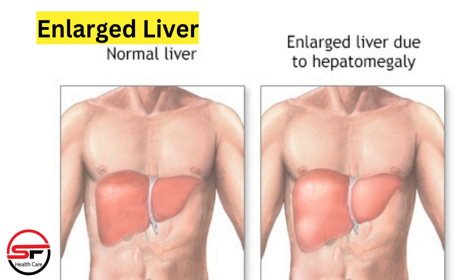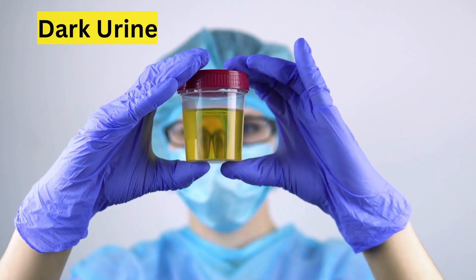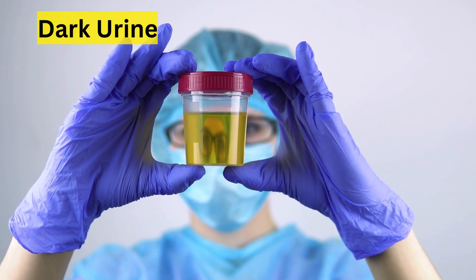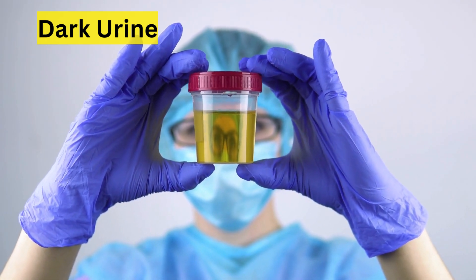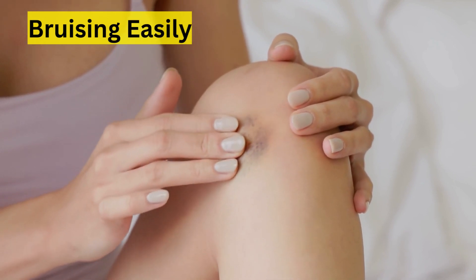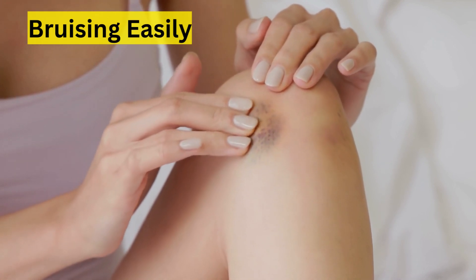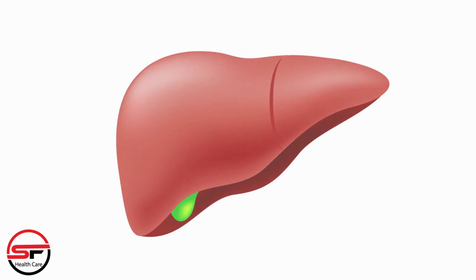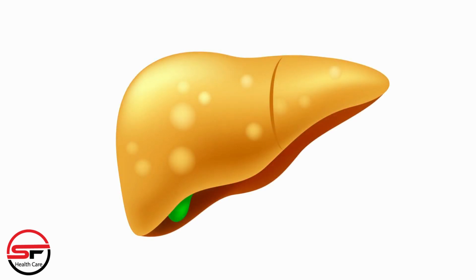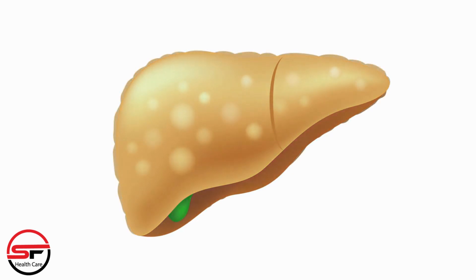Enlarged liver: in some cases, the liver might enlarge, leading to discomfort on the right side of the abdomen, where the liver is situated. Dark urine: dark urine can be a sign of liver problems, including fatty liver disease. The dark color indicates the presence of bilirubin, a substance processed by the liver. Bruising easily: liver dysfunction can affect blood clotting factors, leading to easy bruising and prolonged bleeding. It's important to note that fatty liver disease might not cause noticeable symptoms in its early stages. Regular checkups and screenings are crucial.